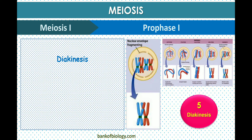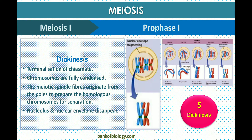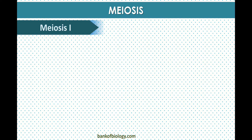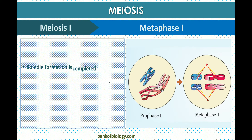Diakinesis is the fifth sub-stage, in which terminalization of chiasmata occurs. Chromosomes are fully condensed and mitotic spindle fibers originate from the poles to separate the homologous chromosomes. The nuclear envelope and nucleolus disappear. This completes prophase one.